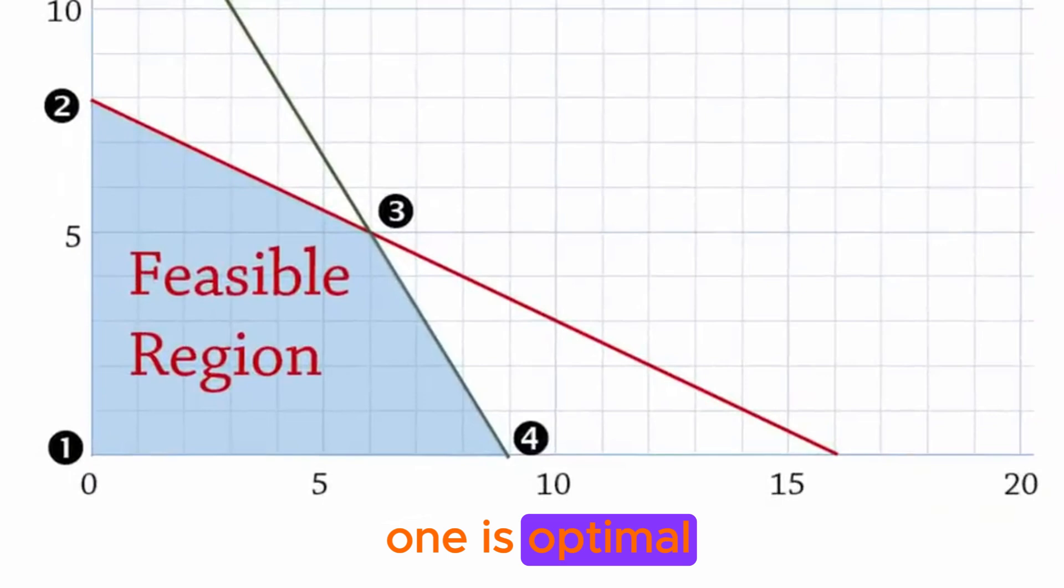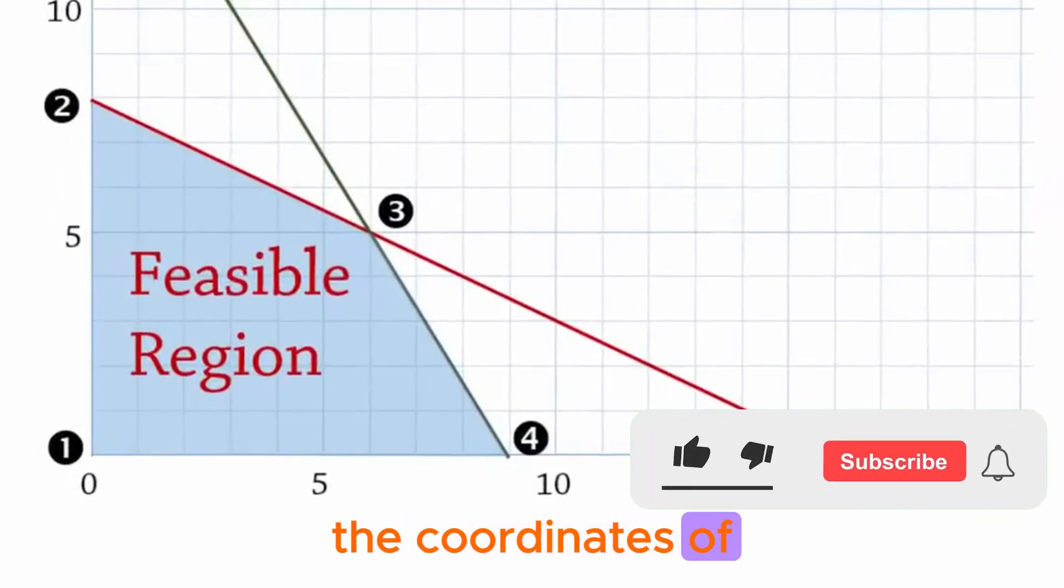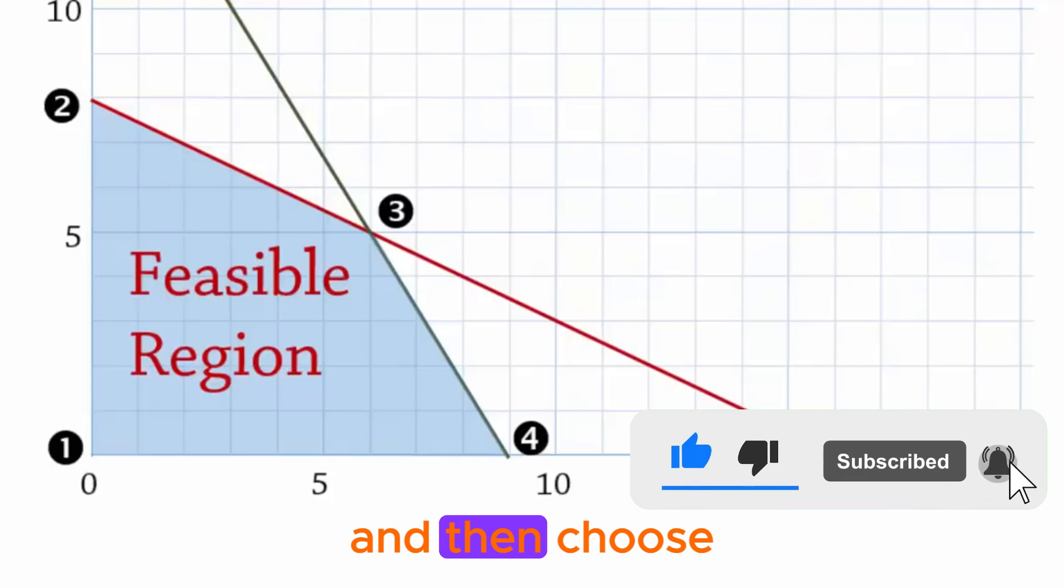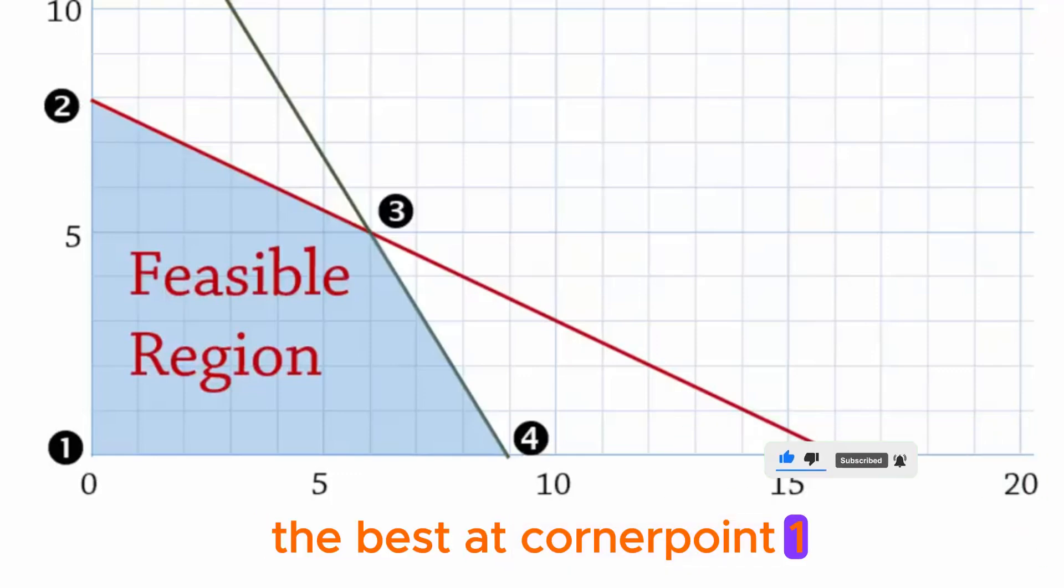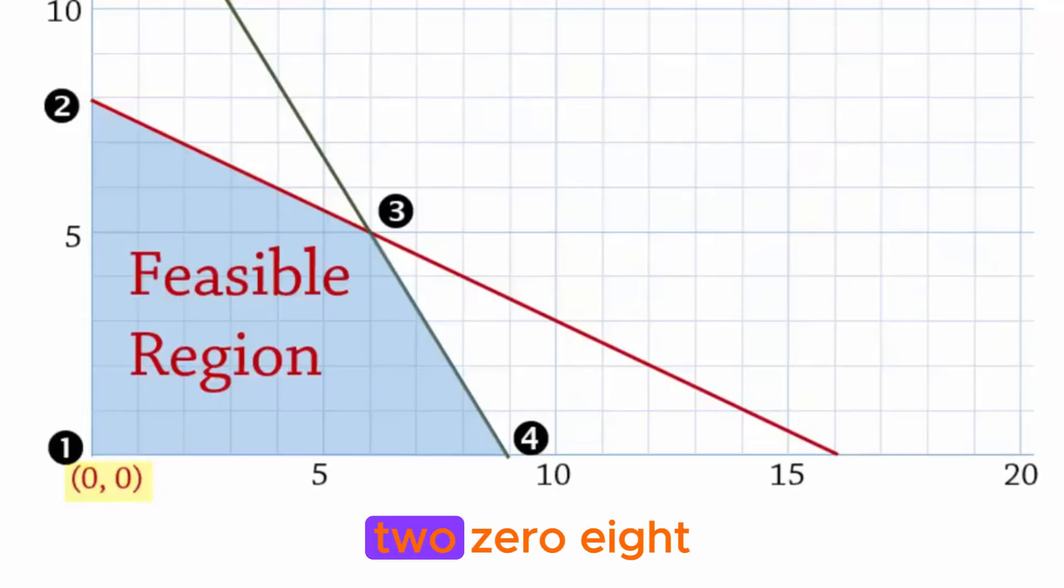To decide which one is optimal, we will find the coordinates of the point, plug them into the objective function, and then choose the best. At corner point 1, the coordinates are clearly 0, 0. At point 2, 0, 8. At point 4, 9, 0. Now, those are easy to see.